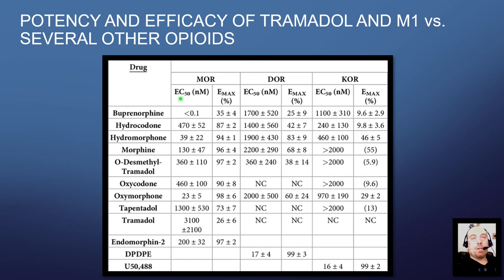Buprenorphine's EC50 — the concentration where we get half of its maximal activity — is very low nanomolar, less than 0.1 nanomolar, so we're talking picomolar range. Regardless, buprenorphine has very high potency but a much lower ceiling effect. That's why it shines in what it's used for — it's given to people so they don't abuse it, because they can't achieve a really strong effect. So that's why it's used for that purpose.